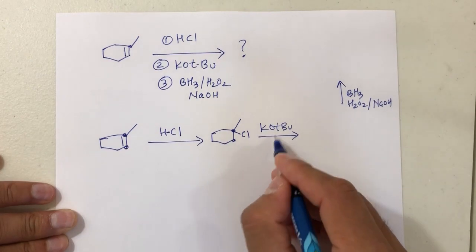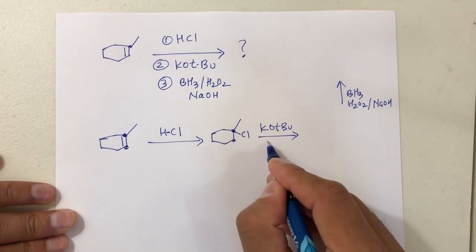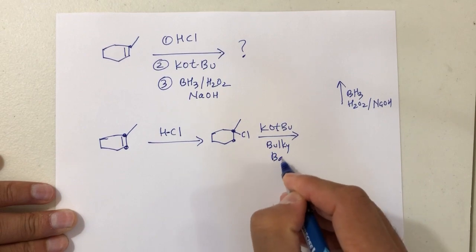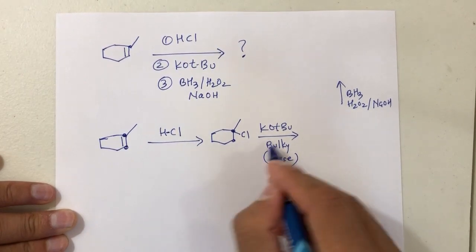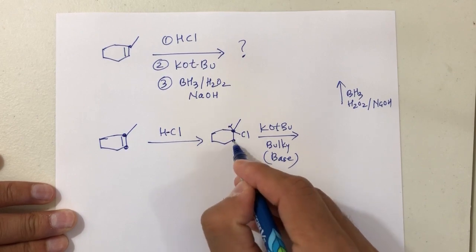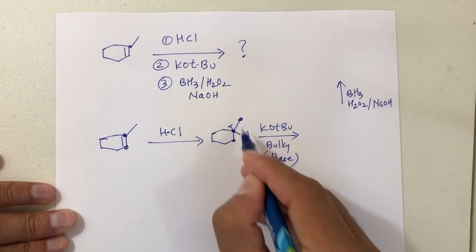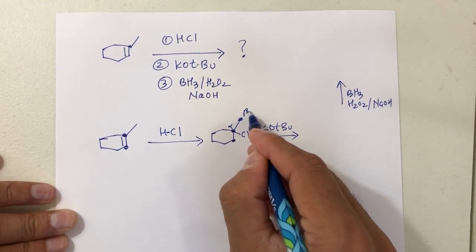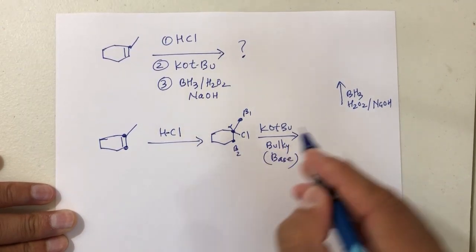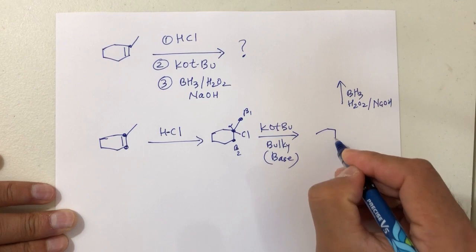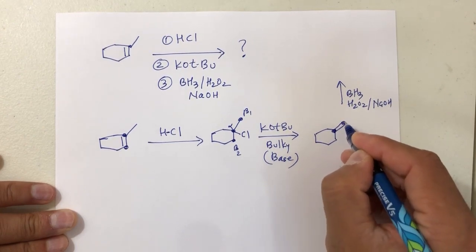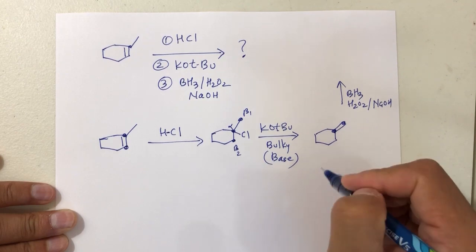Now you're using a base — potassium tert-butoxide — this is a bulky base. If it's a bulky base, you have to be careful how you choose your product. You have an alpha carbon, beta 1, and beta 2. In this case, the beta 1 product will be your major product — so that's your alpha and beta 1.